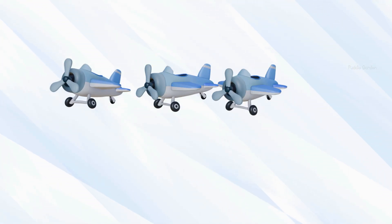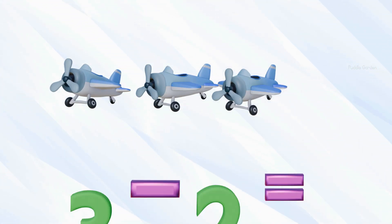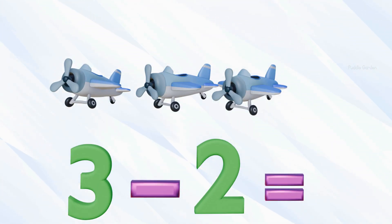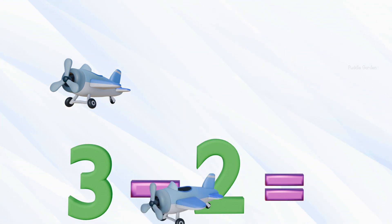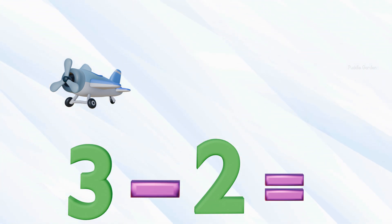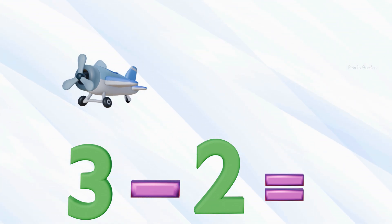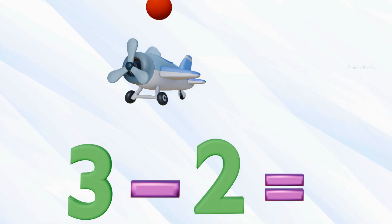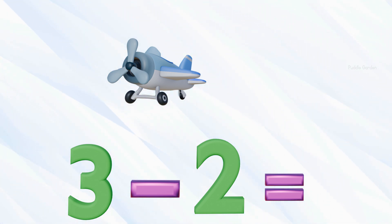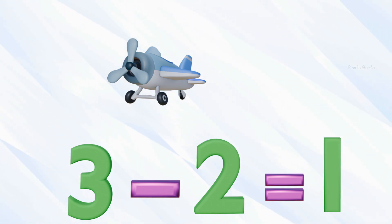If we have three toy planes and we want to subtract two of those, that means we're going to take away two. We're left with how many? One. Three subtract two equals one.